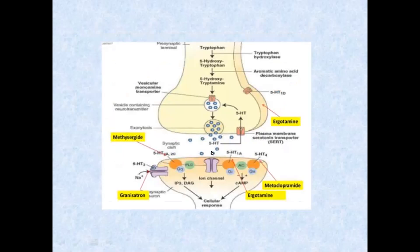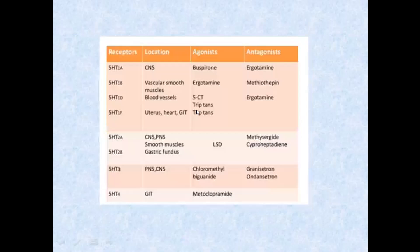Regarding serotonin synthesis: unlike dopamine whose precursor is tyrosine, the precursor of serotonin is tryptophan — from the name itself you can remember. Tryptophan is converted to 5-hydroxytryptophan and then to serotonin. You should also know the selective agonists and antagonists of serotonin, which will be relevant again in the fifth unit covering pharmacology of drugs acting on the central nervous system.